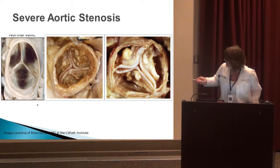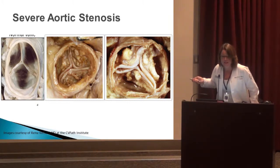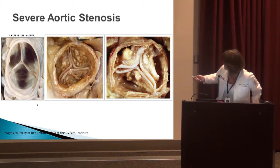This is a normal tri-leaflet aortic valve — you can see the transparency and how nicely it co-opts; the leaflets close together nicely. Here is a valve that has calcium deposits on it. Look at all these chunks of calcium — and you can see it's not closed 100%, so you can get leakage.